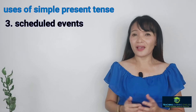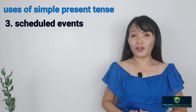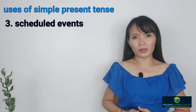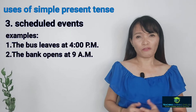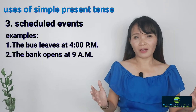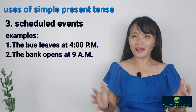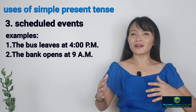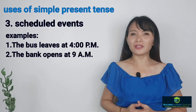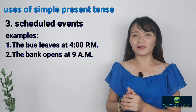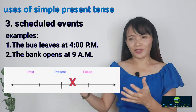The third is when we talk about scheduled events, then we use Simple Present Tense. For example, the bus leaves at 4 o'clock, the bank opens at 9 o'clock. This is a regular event. We can place this on the timeline in between past and future.